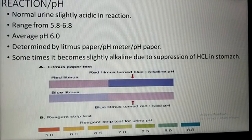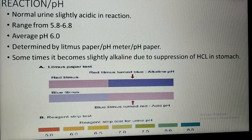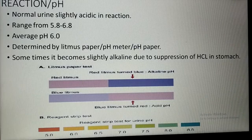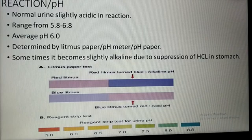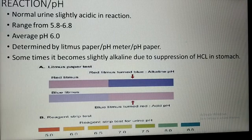Normally, urine is slightly acidic, with a pH range of 5.8 to 6.8 and an average pH of 6.0. pH is determined by different methods such as litmus paper, pH meter, and pH paper. Sometimes urine becomes slightly alkaline due to the suppression of HCl in the stomach, but normally urine is slightly acidic in reaction.